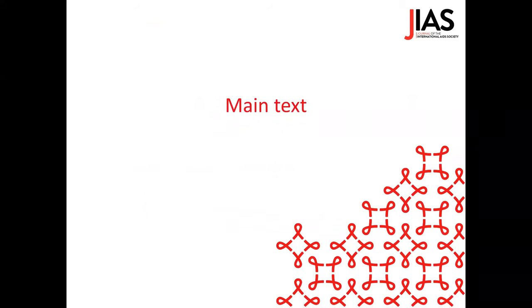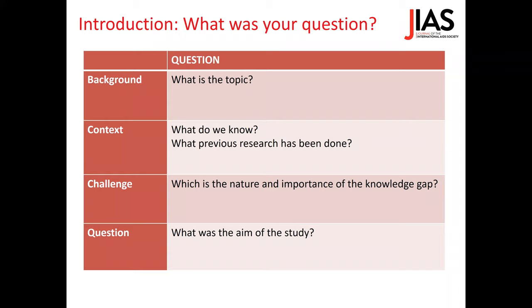Now we are going to go through the different sections in the main text, starting with the introduction. It's similar to the abstract introduction but an extended version. You need to respond to the same questions: the background — what is the topic; the context — what do we know about this topic and what has been previously published; the challenge — what is the nature and importance of the knowledge gap; and finally, the specific aim of your study. The introduction has a funnel shape, from general to specific.